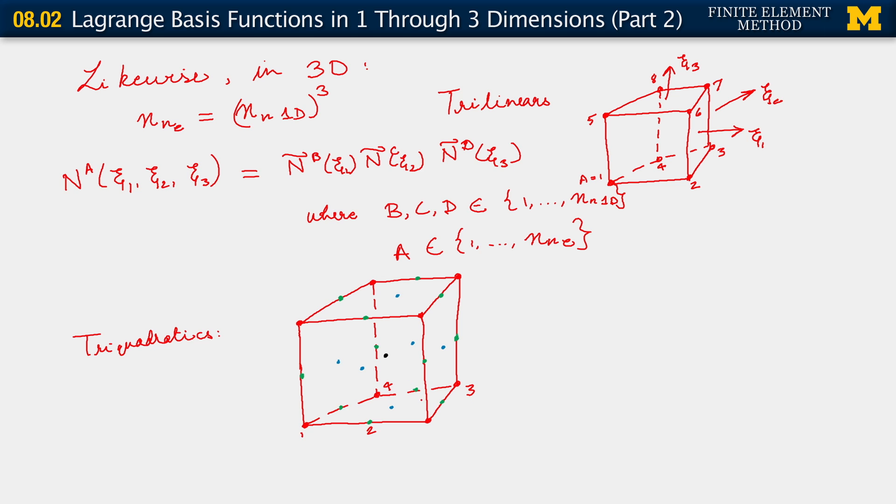Okay, so I have 1, 2, 3, 4, 5, 6, 7, 8. And then continuing on, we get 9, 10, 11, 12, 13, 14, 15, 16, 17, 18, and the mid-body node, 19, 20, 21, 22, 23, 24, 25, 26, and 27 ends with the mid-face node on the top.